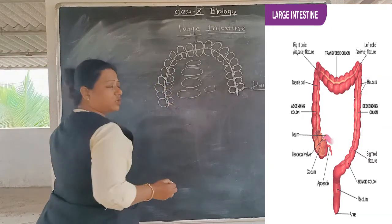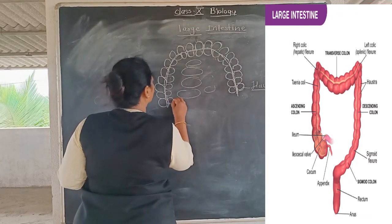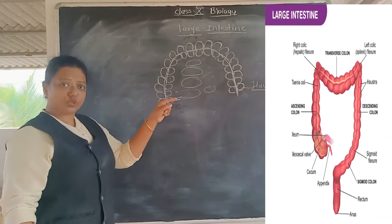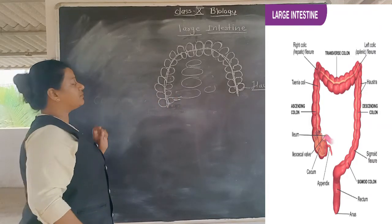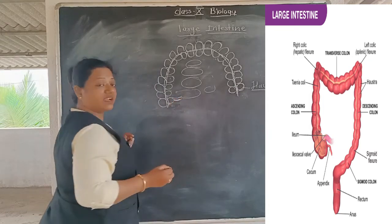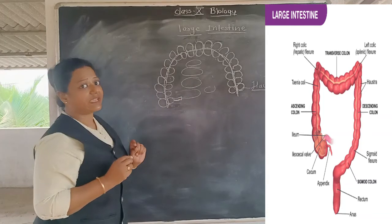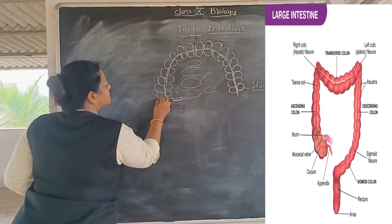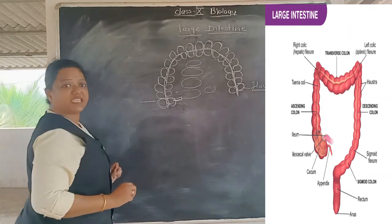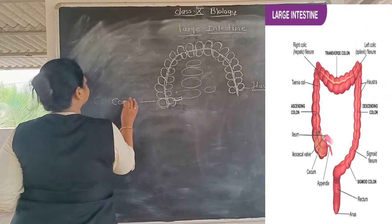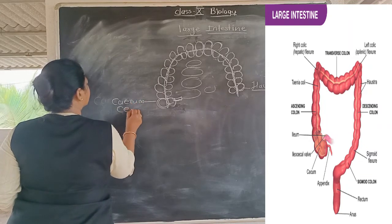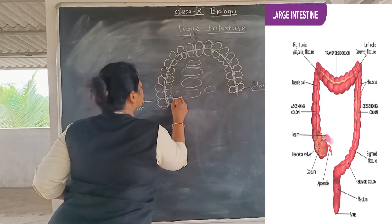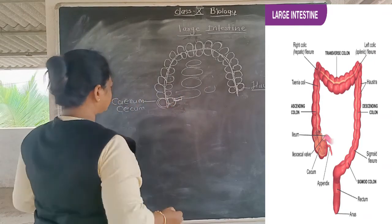The last part of the small intestine is the ileum. For your better understanding, I have attached one picture. This last part of the small intestine — the ileum — opens into the first part of the large intestine, which is called the cecum (also spelled caecum). The difference is only in Latin and British English. This is the junction where the small intestine connects to the large intestine.